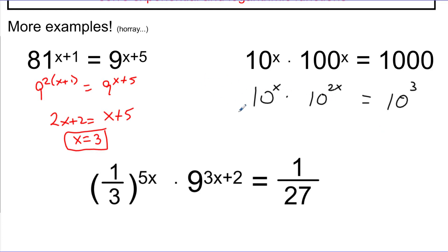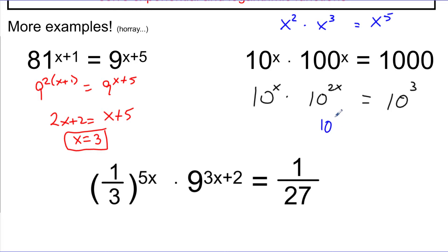Now I need to combine the two bases of 10 on the left-hand side. Using the multiplication property of exponents: when multiplying same bases, add the exponents. Just like x squared times x to the third equals x to the fifth, x plus 2x is 3x. This becomes 10 to the 3x equals 10 to the 3. Now I have one base on each side and they match, so 3x equals 3, giving x equals 1.